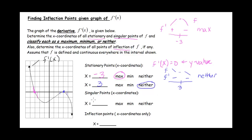Now let's look for singular points. Singular points occur where f prime does not exist. Looking at our graph of f prime, there is always a y value, so there are no singular points.